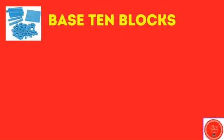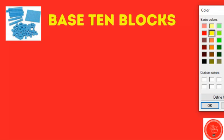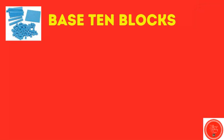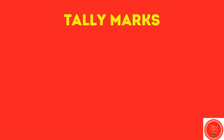Base 10 blocks. If we're using cubes to show the number one, we just need one cube. With each number, we'll add another. Tally marks. A tally mark is a line that looks like this. One tally mark represents the number one.